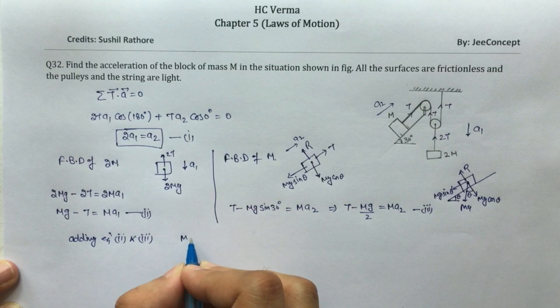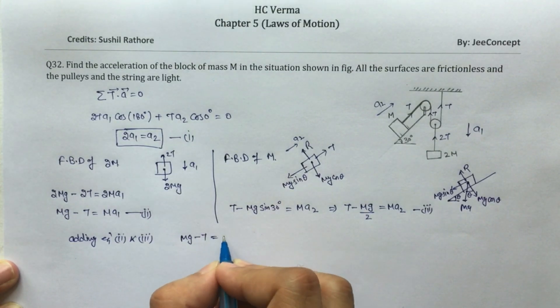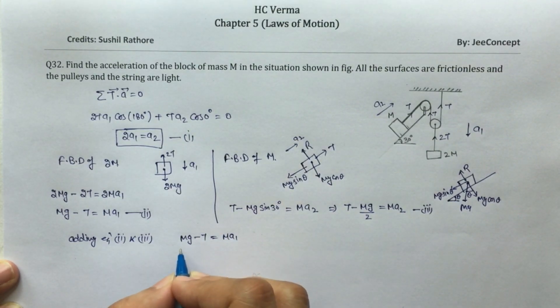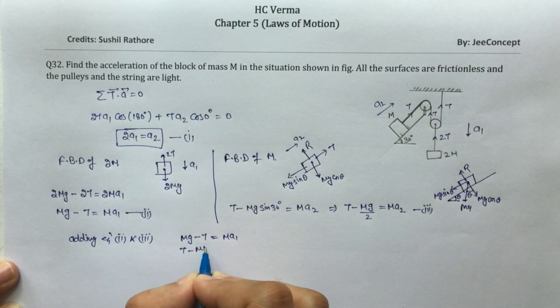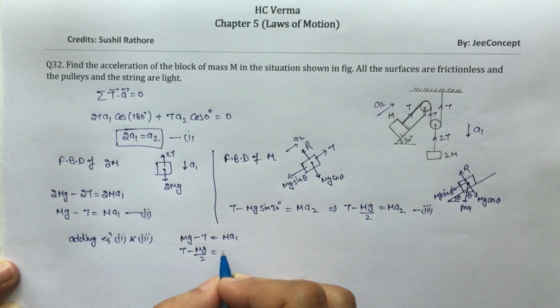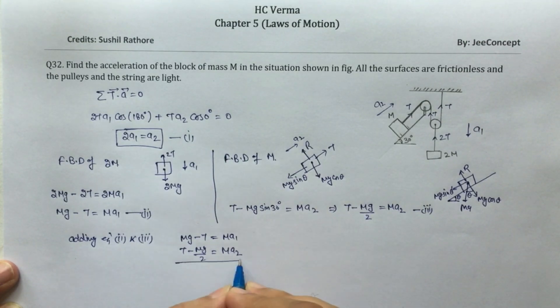Now adding equation 2 and 3, we will get mg minus T equals m·a1 and T minus mg by 2 equals m·a2. T will cancel out.